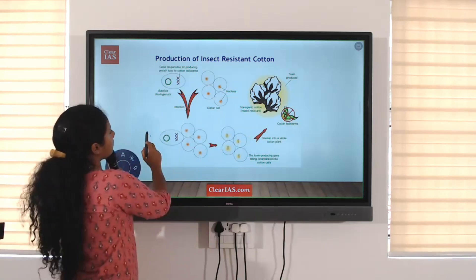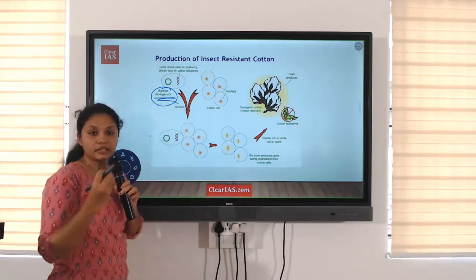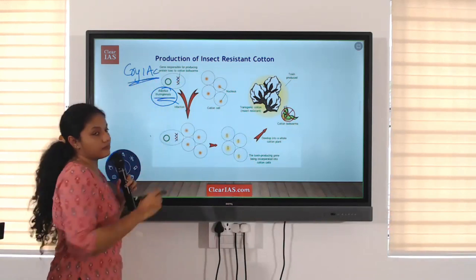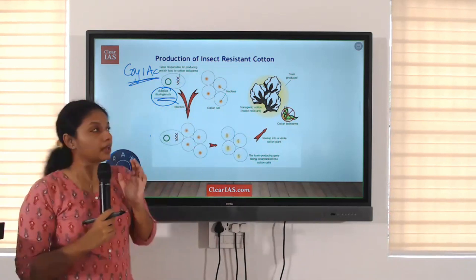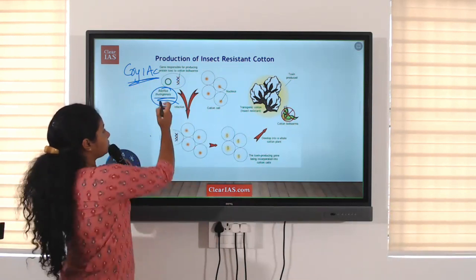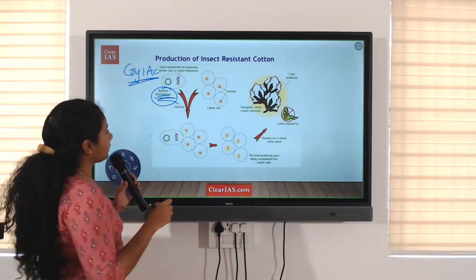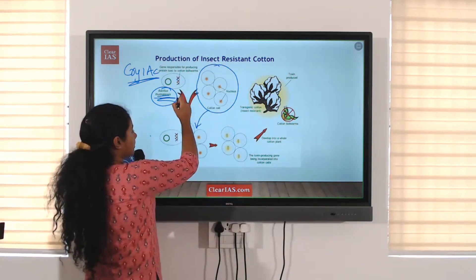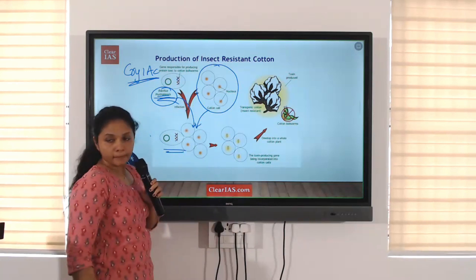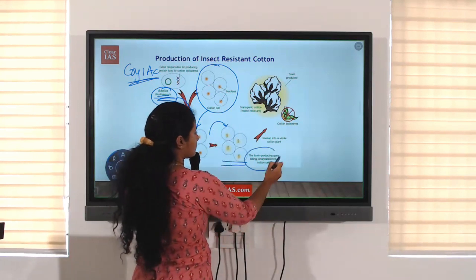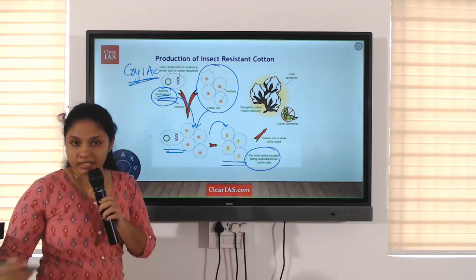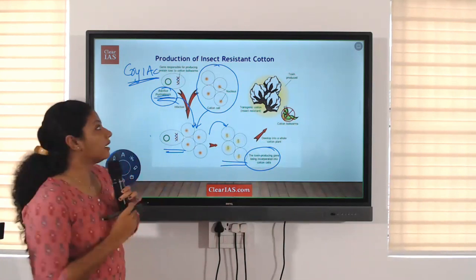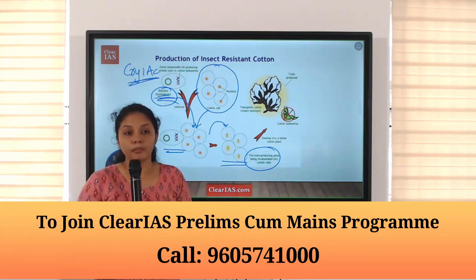First, this is Bacillus thuringiensis, the bacteria from which we are extracting the genes. There are two genes — CRI1AC is the major gene which is responsible for the toxin or protoxin. We are extracting that gene from the Bacillus thuringiensis bacteria. Now we are introducing this gene into the cotton. This gets introduced into the cotton cells, and as the cotton develops, this gene also develops. So this cotton now has the Bacillus thuringiensis CRI1AC gene, which is responsible for production of protoxin or toxin.